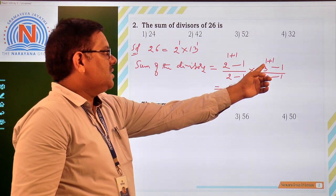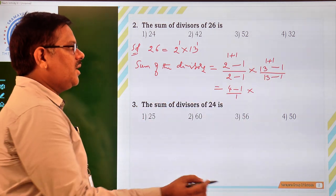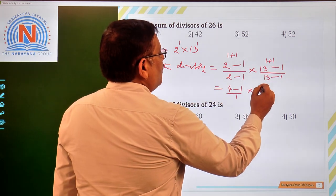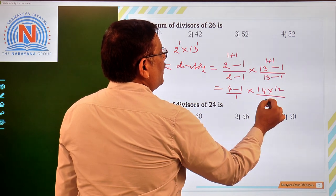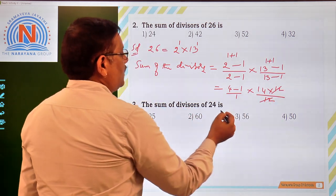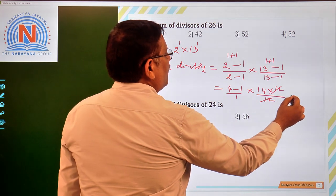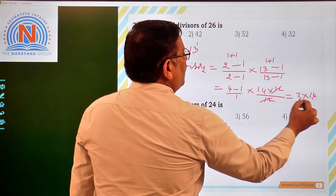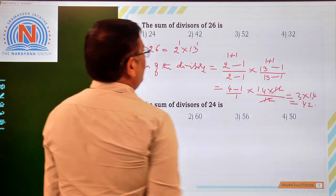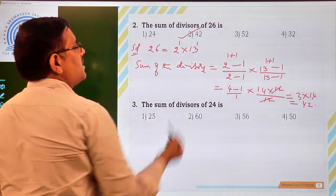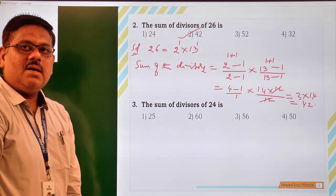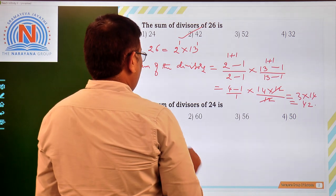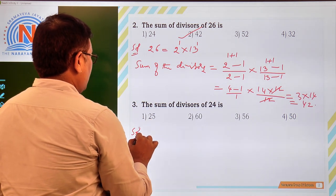Or else we do one more way. 13 square minus 1 is 13 plus 1 into 13 minus 1, that is 14 into 12 by 13 minus 1 is 12, 12 cancels, it is 4 minus 1, so that is 3, so that is 3 into 14, 3 times 14 is 42. So out of the given options, second option is 42, so that is a right answer for us. Now let us do the next question.